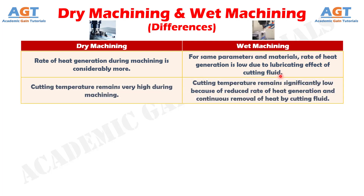Number 7: In dry machining, cutting temperature remains very high during machining, whereas in wet machining, cutting temperature remains significantly low because of reduced rate of heat generation and continuous removal of heat by cutting fluid.